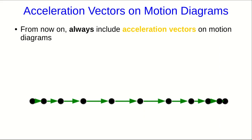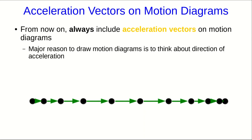From now on, we are always going to include acceleration vectors on motion diagrams, and the reason is that really the main reason we draw motion diagrams in the first place is that they help us to think about the direction of acceleration, which we often need to know. What I mean by always include them is that we're going to draw the acceleration vector next to each point on the diagram, except as we'll see for the points on the ends.